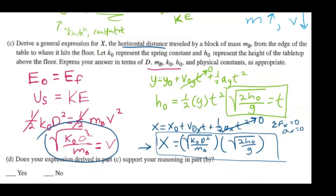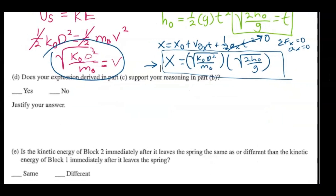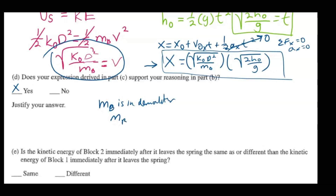Let's move on to part D. It asks: does your expression derived in part C support your reasoning? Yes, it does. We can see here that mb is in the denominator. So as mb increases, that factor causes a decrease in the initial velocity in the x direction. And since distance is equivalent to vx times time, that directly leads to a decrease in the horizontal distance.